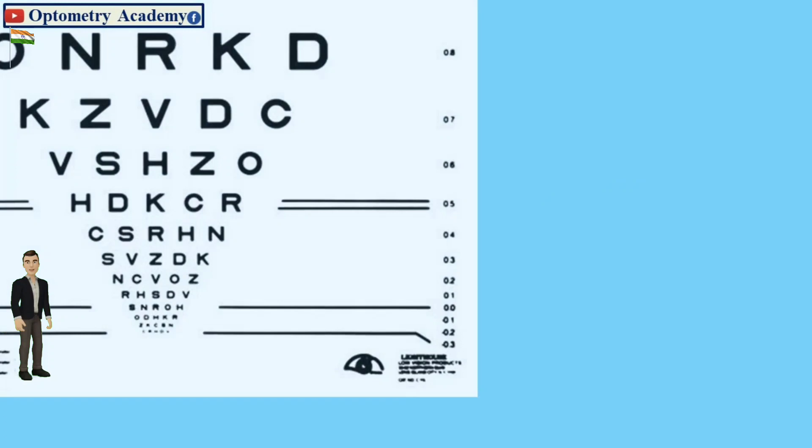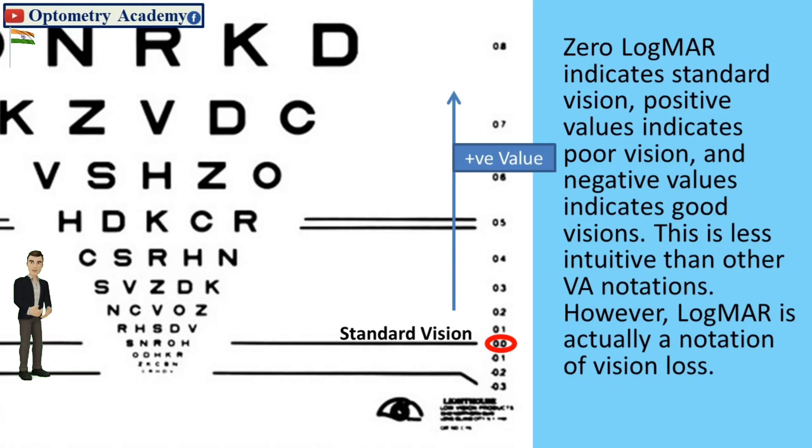Zero LogMAR indicates standard vision, positive value indicates poor vision and negative value indicates good vision. This is less intuitive than other visual acuity notation. However, LogMAR is actually a notation of vision loss.